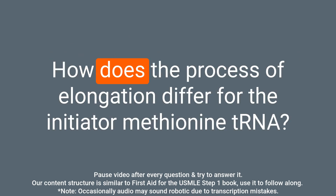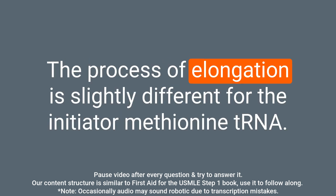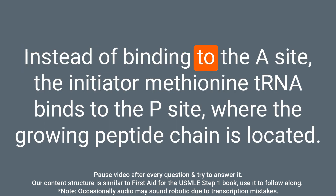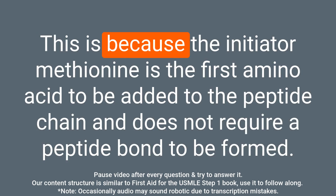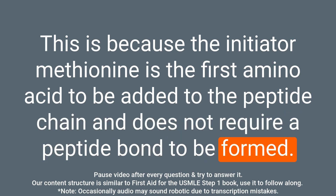Question: How does the process of elongation differ for the initiator methionine tRNA? Answer: The process of elongation is slightly different for the initiator methionine tRNA. Instead of binding to the A site, the initiator methionine tRNA binds to the P site, where the growing peptide chain is located. This is because the initiator methionine is the first amino acid to be added to the peptide chain and does not require a peptide bond to be formed.